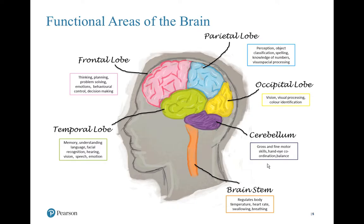Briefly, looking at some functional areas of the brain — this is an extremely simplified model, but easy to understand — it demonstrates that most cognitive functions are associated with a particular area of the brain. Starting in the upper left, the frontal lobe handles thinking, planning, problem solving, and decision making. We refer to most of those as executive functions. This area is also responsible for impulse control, or response inhibition.